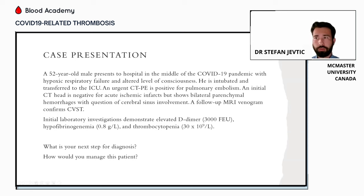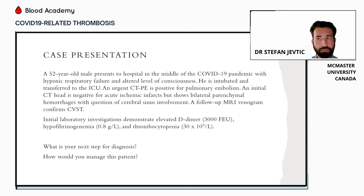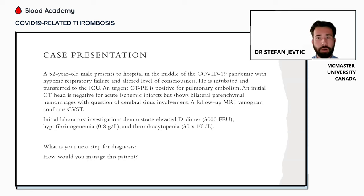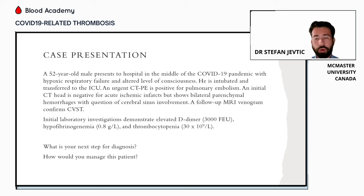We have a 52-year-old male presenting to hospital during the COVID-19 pandemic with hypoxic respiratory failure and an altered level of consciousness. He's initially intubated and transferred to the ICU with a CT-PE confirming a pulmonary embolism. On initial CT head, there is no evidence of acute ischemic infarcts, but there is bilateral parenchymal hemorrhaging and a question of cerebral venous sinus involvement. A follow-up MRI venogram confirmed CVST. Initial investigations show an elevated D-dimer at 3000 fibrinogen equivalent units, hypofibrinogenemia at 0.8, and thrombocytopenia at 30. The question is: what are your next steps for diagnosis and how would you manage this patient?